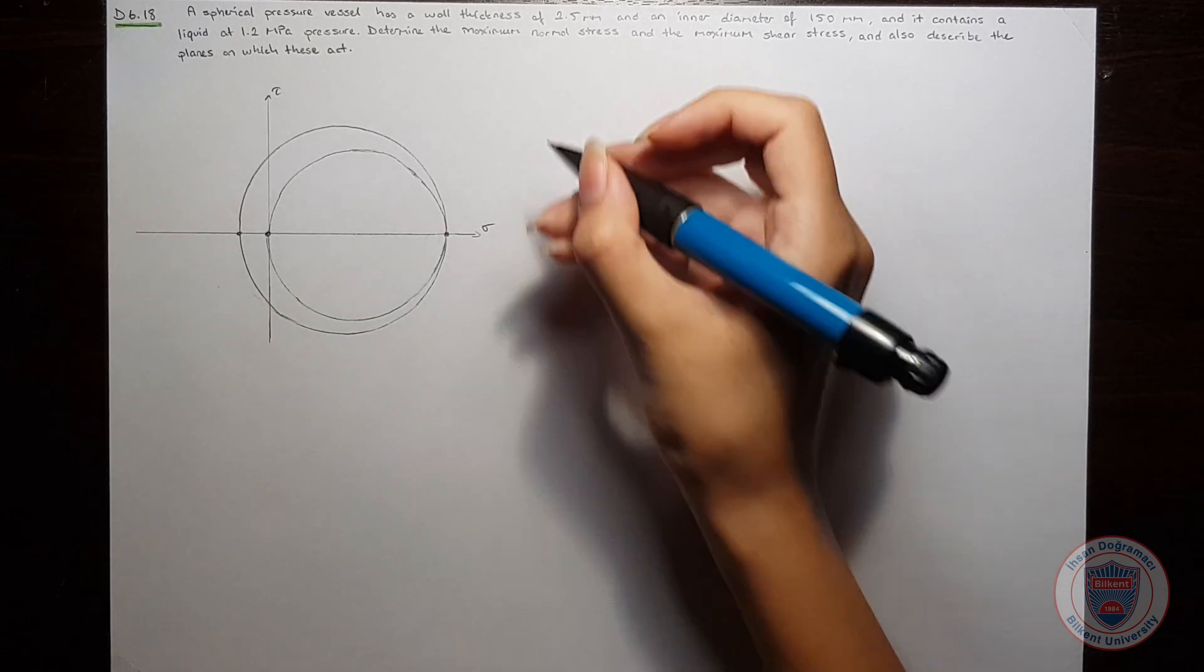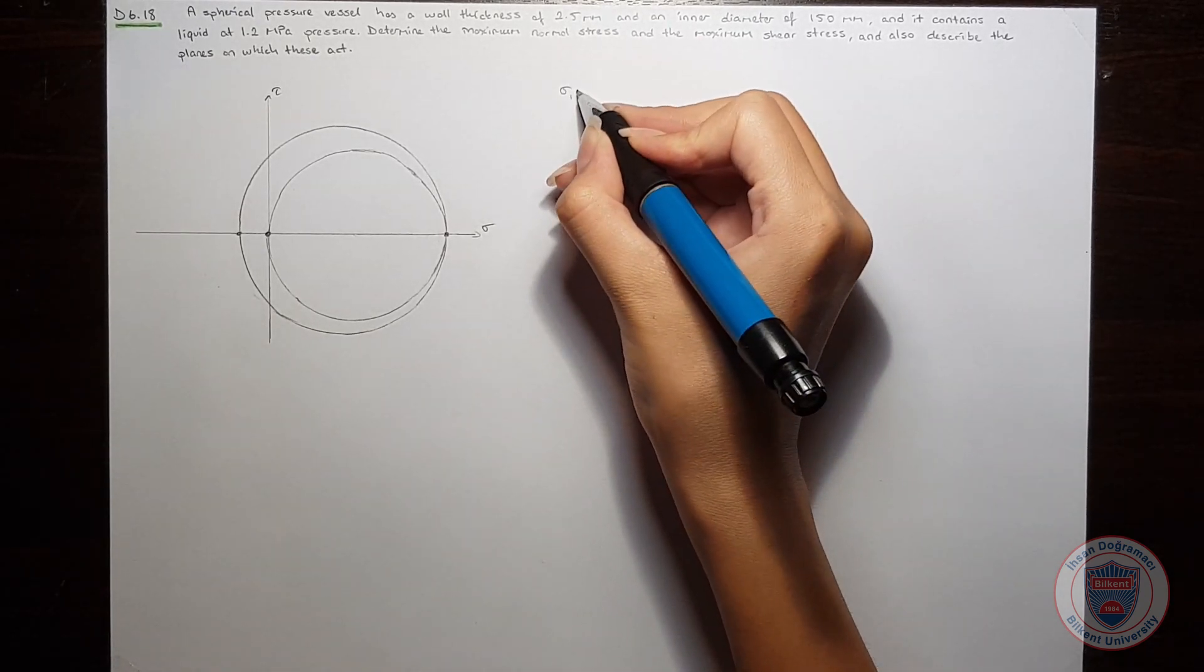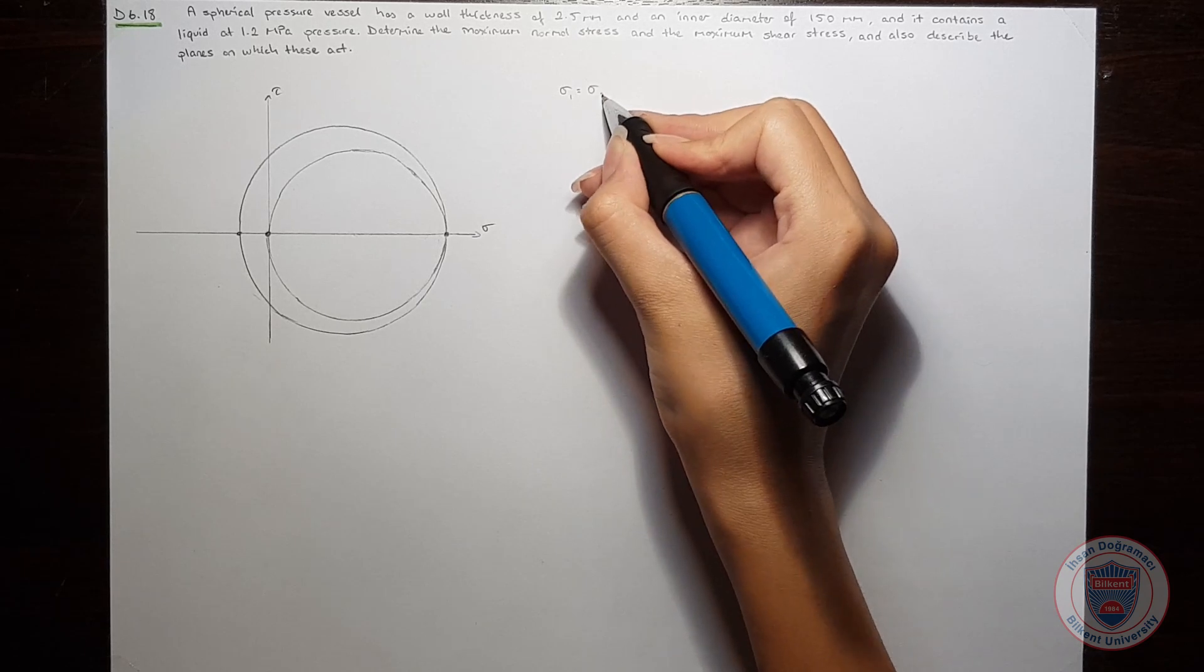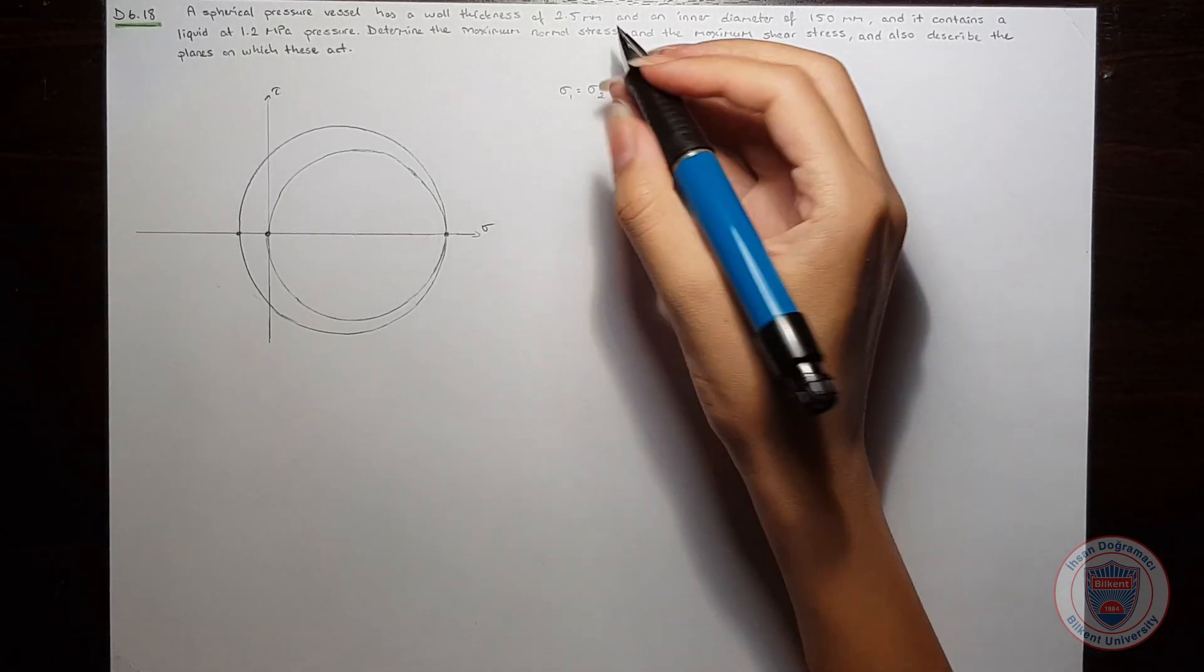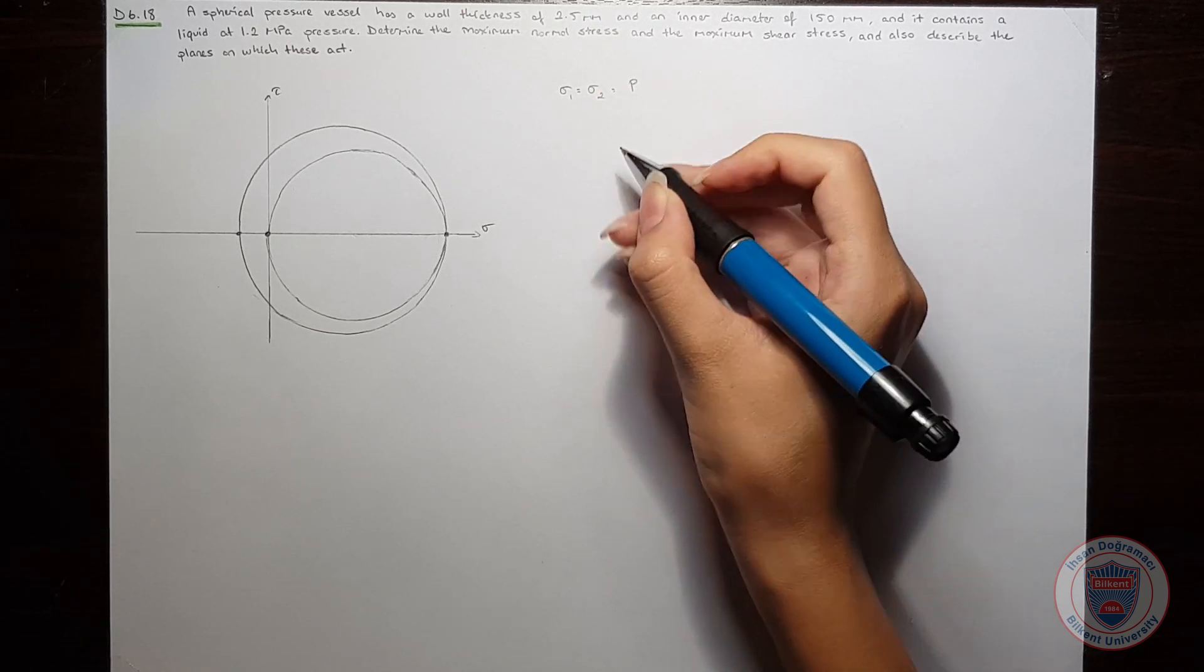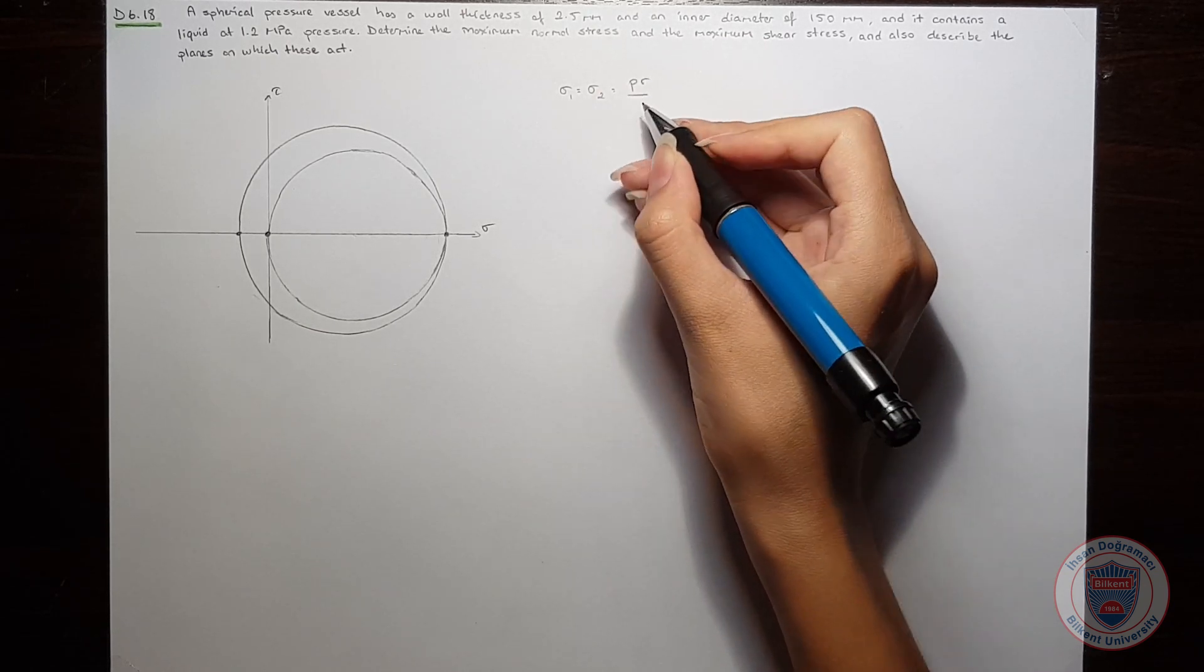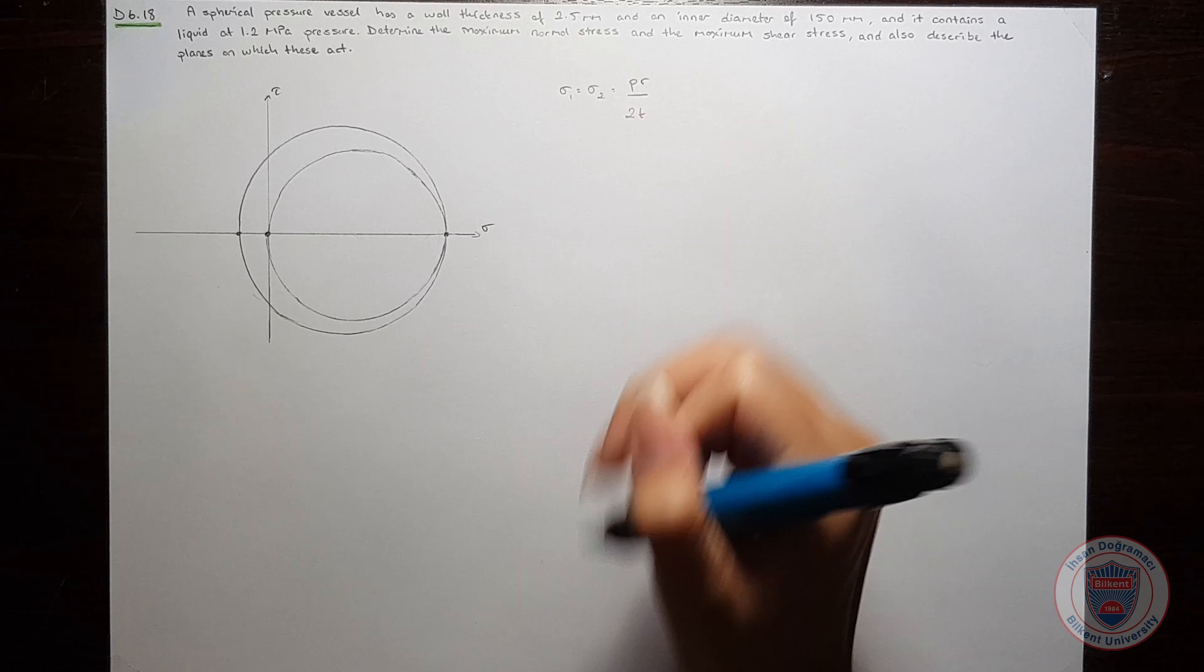For a spherical pressure vessel, we know that sigma1 will be equal to sigma2, and these will be equal to the pressure times radius over 2 times thickness.